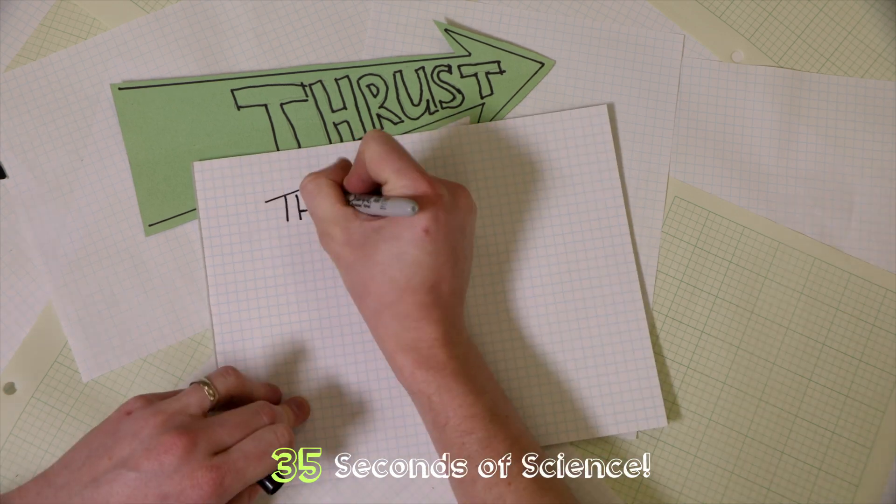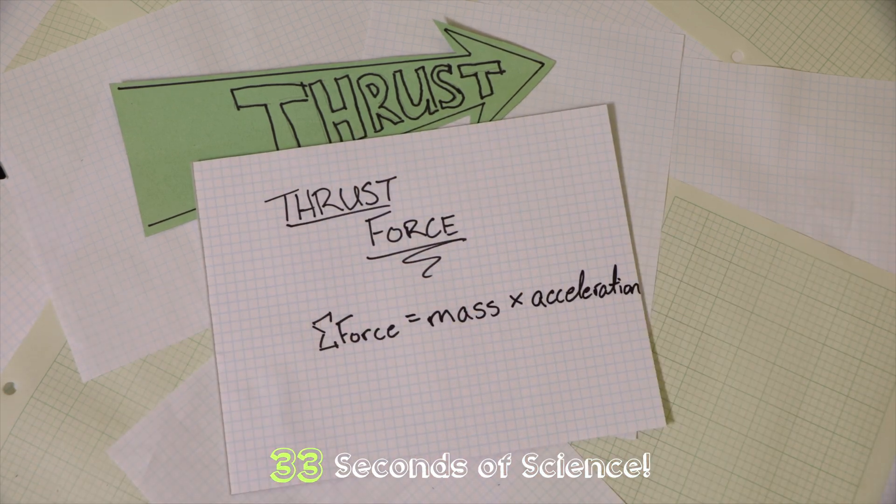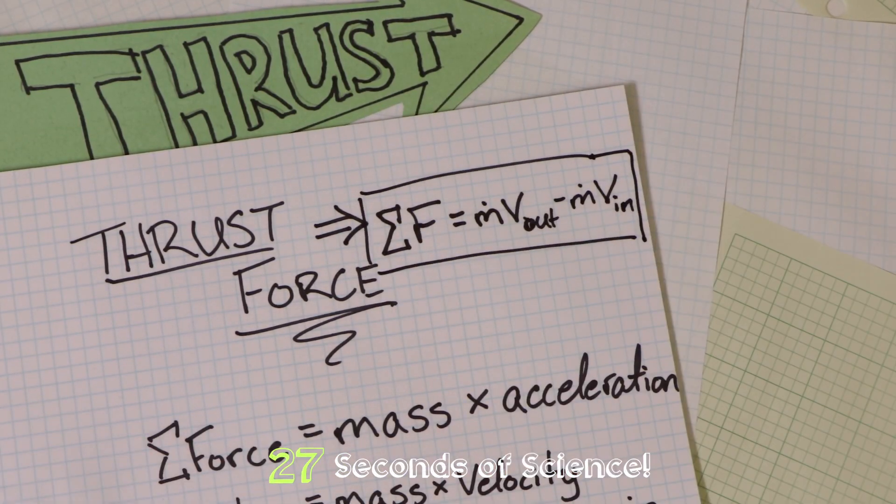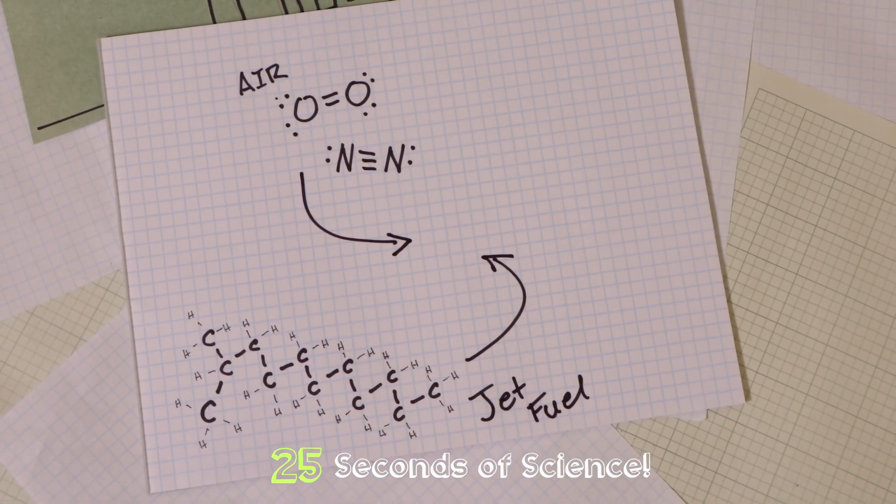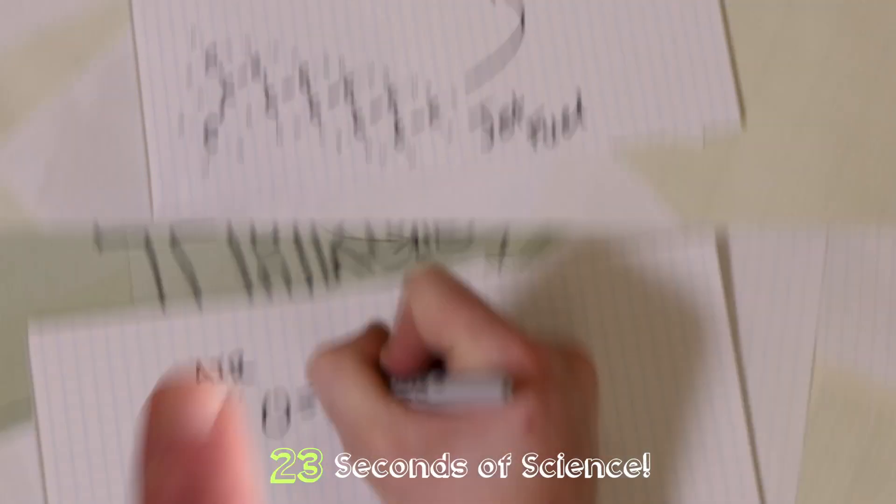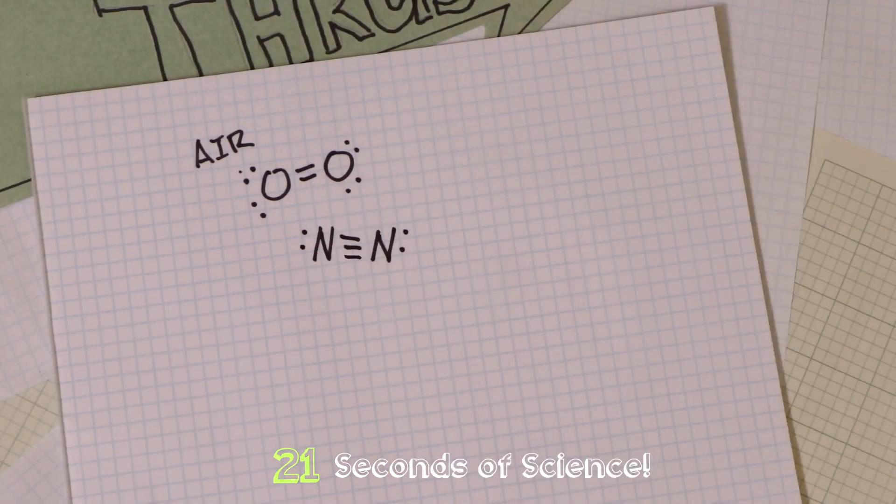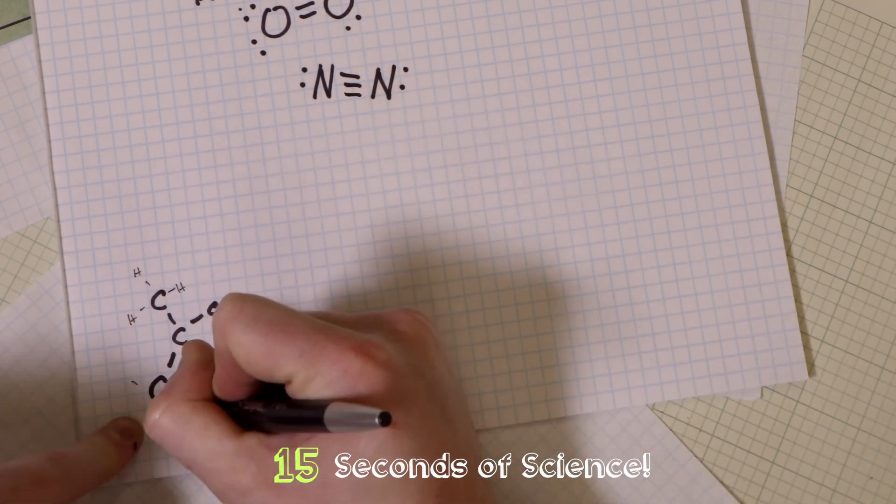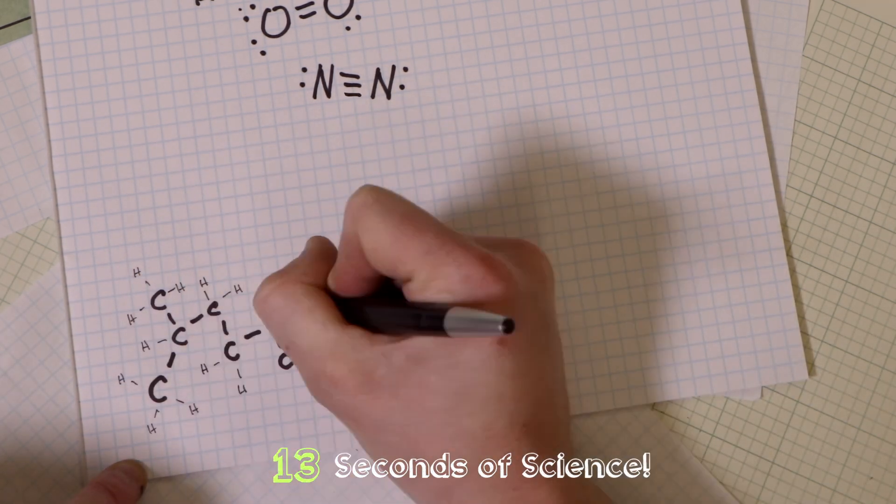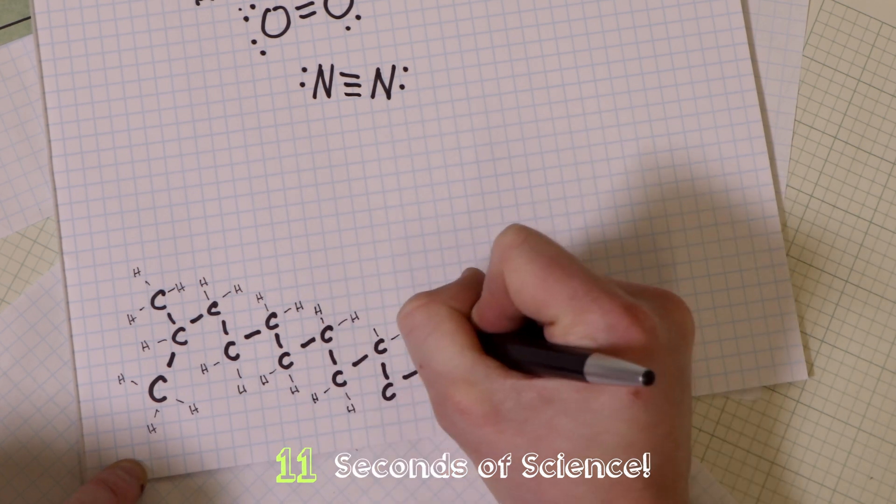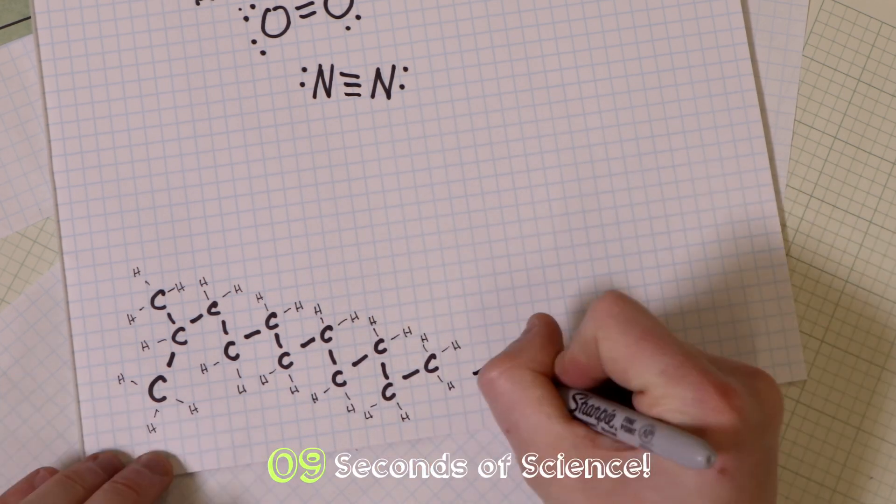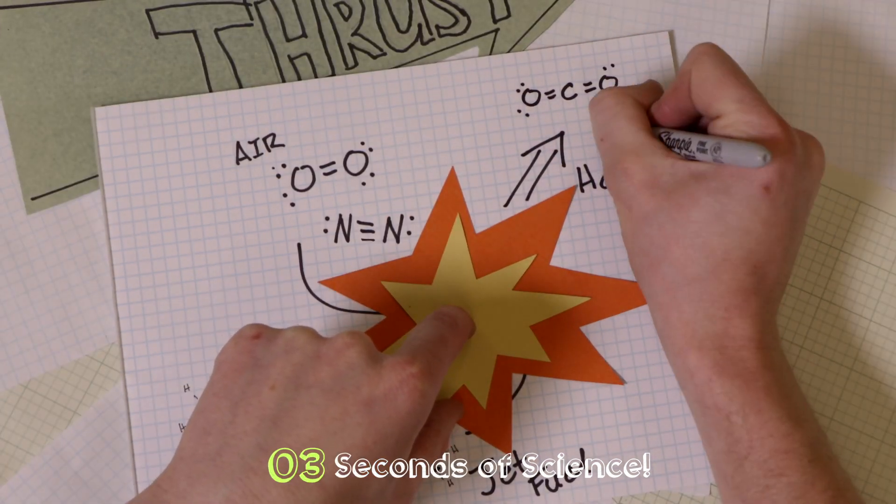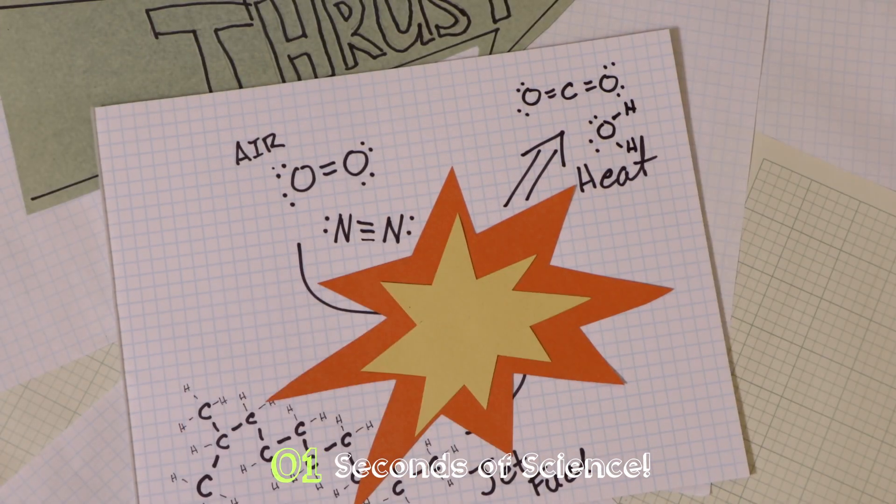So the thrust force comes from combusting jet fuel pushing hot gases out the nozzle. This happens because of something called conservation of momentum. Now, jet fuel is made of big, heavy molecules with a lot of mass. When the fuel is combusted with air, it breaks down into much smaller and lighter molecules, water and carbon dioxide. Since momentum must be the same and each molecule is now lighter and there are much more of them, they have to move faster. The faster these gases leave, the more thrust we get and the faster our plane can fly.